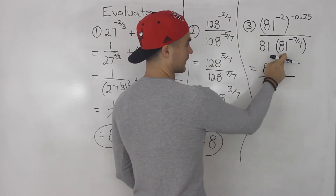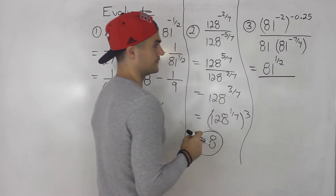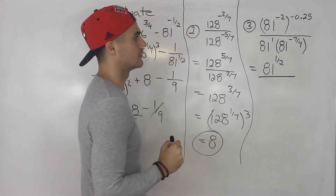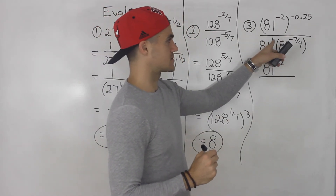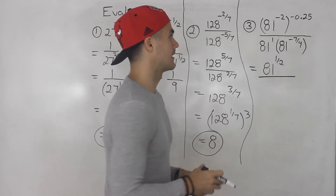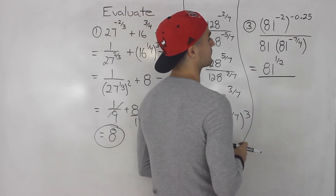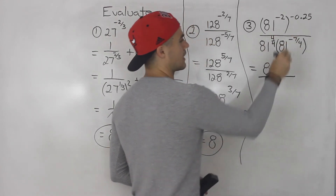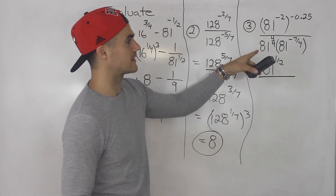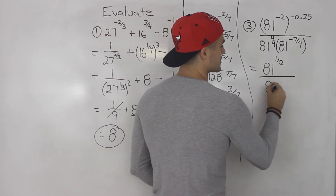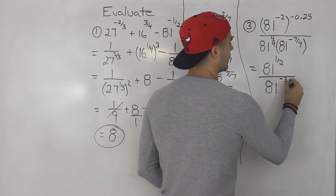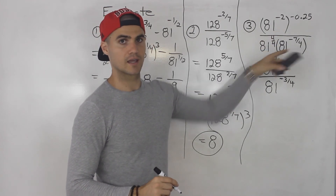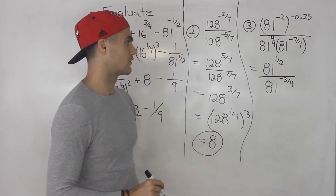For the numerator, we multiply the exponents: negative 2 times negative 0.25 gives us 81 to the power of positive 0.5, or 1 half. For the denominator, we're multiplying exponents with the same base — 81 by itself has an exponent of 1, so we add: 1 plus negative 7 over 4. Changing 1 to 4 over 4, we get 4 over 4 minus 7 over 4, which gives us 81 to the power of negative 3 over 4.